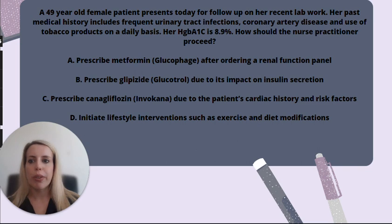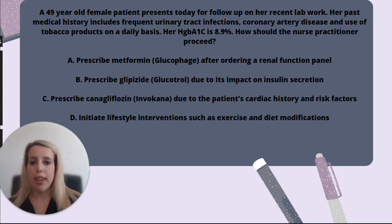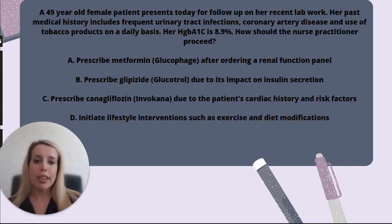Here's another question. A 49-year-old female patient presents today for follow-up of her recent lab work. Her past medical history includes frequent urinary tract infections, coronary artery disease, and the use of tobacco products on a daily basis. Her hemoglobin A1c is 8.9%. How should the nurse practitioner proceed? A: Prescribe metformin (Glucophage) after ordering a renal function panel. B: Prescribe glipizide (Glucotrol) due to its impact on insulin secretion. C: Prescribe canagliflozin (Invokana) due to the patient's cardiac history and risk factors. D: Initiate lifestyle interventions such as exercise and diet modifications.